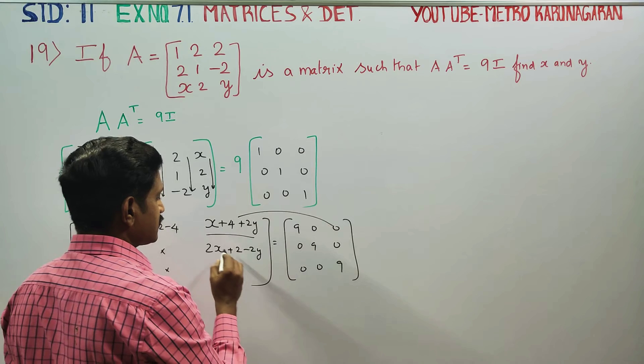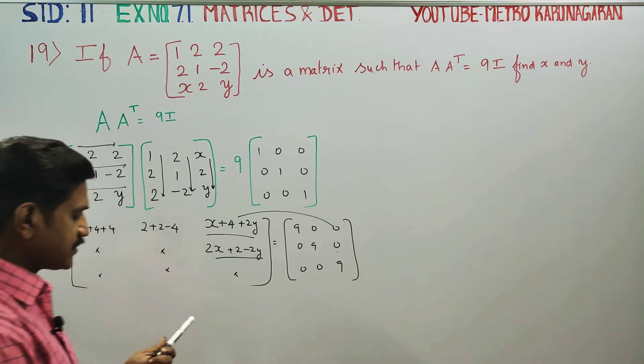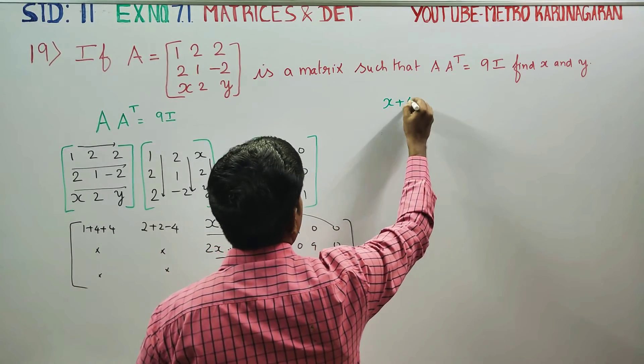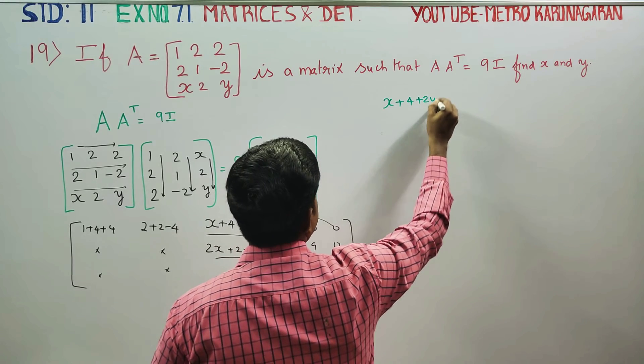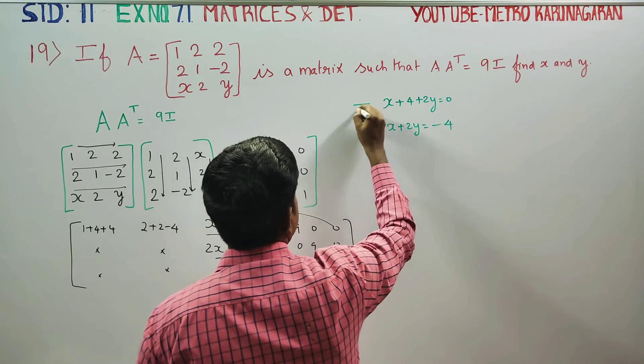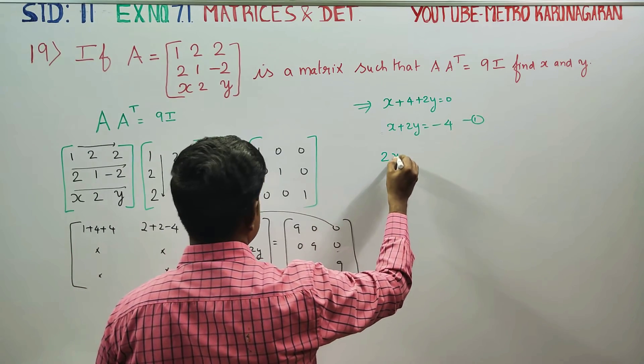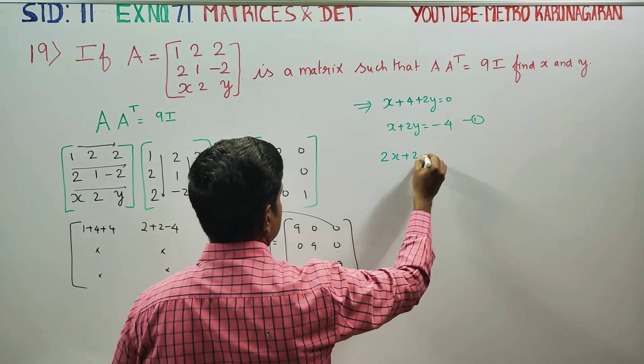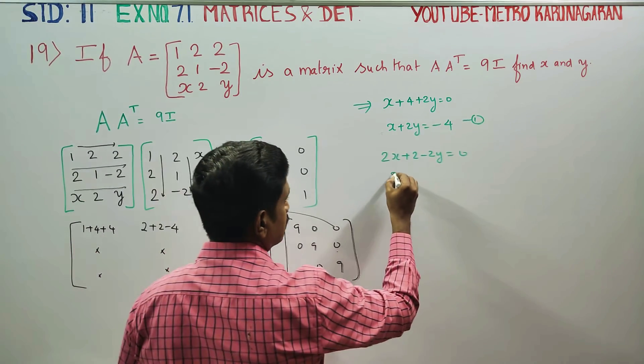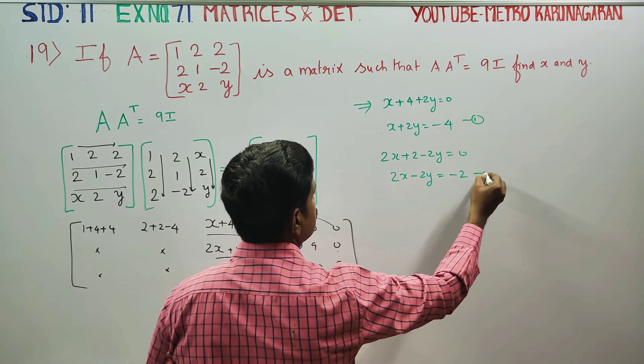This is equal to this and this equal to 0. 2 equal to 0. That is why I have two equations formed. What is the equation? x plus 4 plus 2y is equal to 9. Therefore, x plus 2y is equal to 5. This is my equation number 1. 2x plus 2 minus 2y is equal to 0. That is why I have two equations. 2x minus 2y is equal to minus 2. Equation number 2.